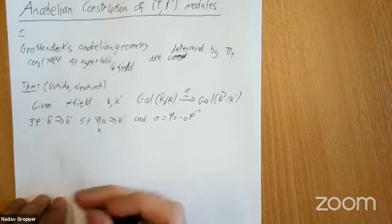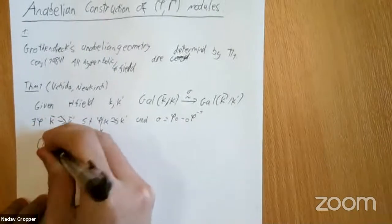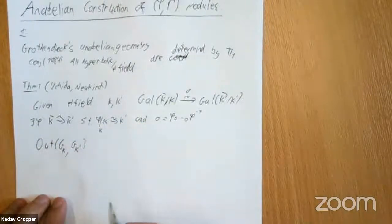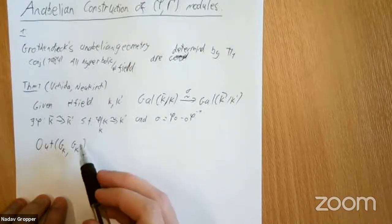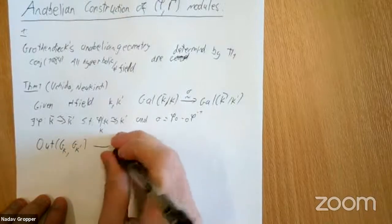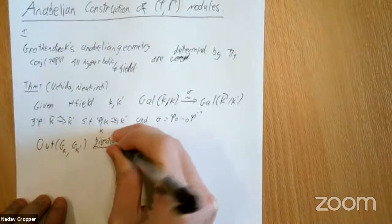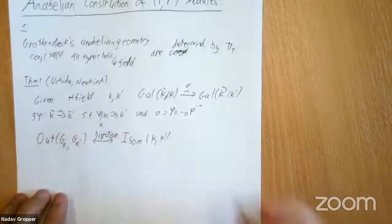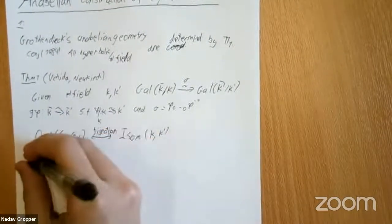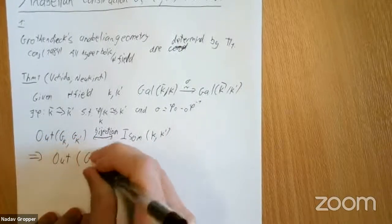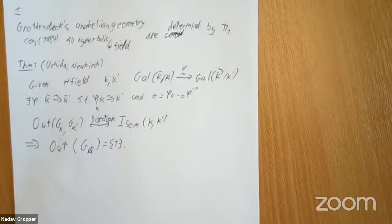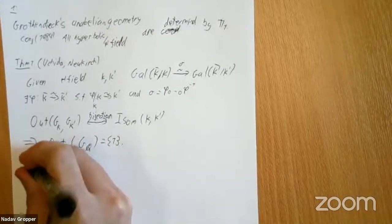Another way of phrasing this idea is that if we look at the outer morphisms between the two groups — morphisms from one group to the other modded by the inner automorphisms of the second group — this thing is in bijection with the isomorphisms of the fields. One interesting thing this will tell us is that the outer automorphisms of the absolute Galois group of the rationals must be trivial. There's not much to say on the number field case, but the interesting thing comes when we look at the local case.